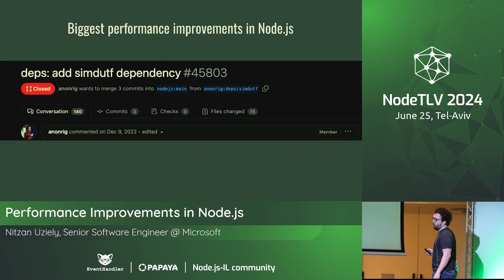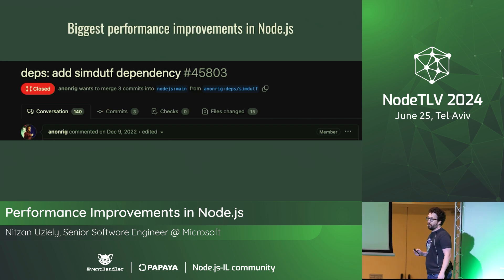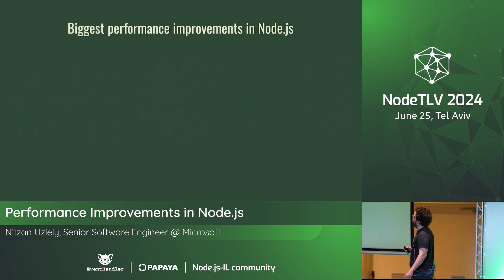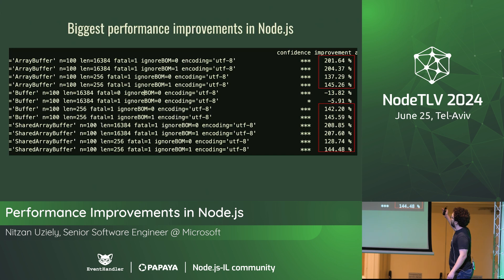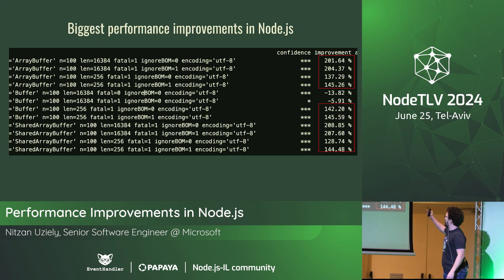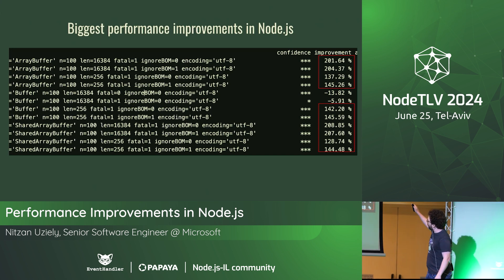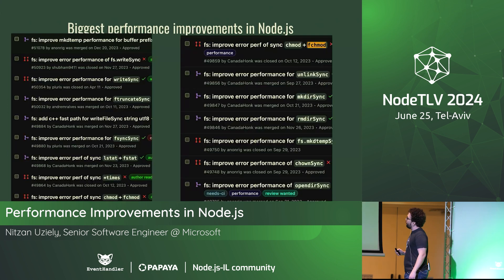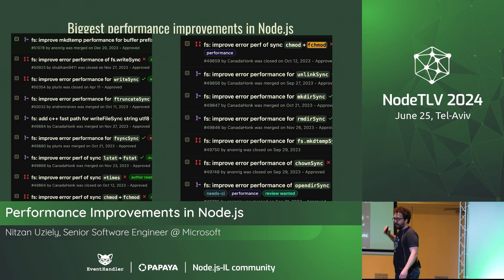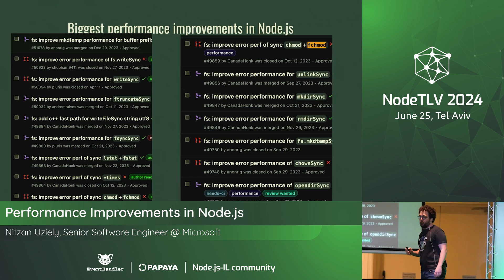SIMD UTF-8: this moved UTF-8 parsing to use SIMD operations. It validates and transcodes UTF-8. You can see very nice numbers — a bit of regression on some, but the huge numbers, 140%, are amazing.